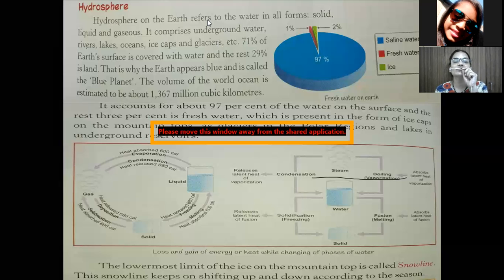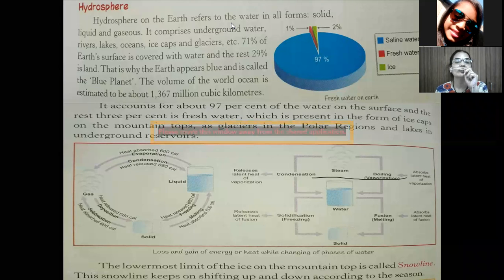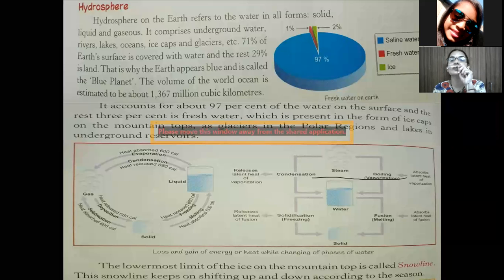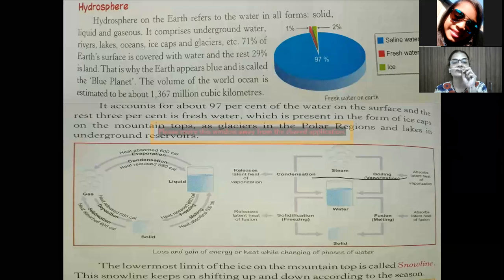Hydrosphere on the earth refers to water in all forms — that is solid, liquid, and gas. It comprises rivers, lakes, oceans, ice caps, glaciers, and so on. 71% of the earth's surface is covered with water and the rest 29% is land. So 71% of the earth is covered with water, which is why the earth is called the blue planet because water appears blue.